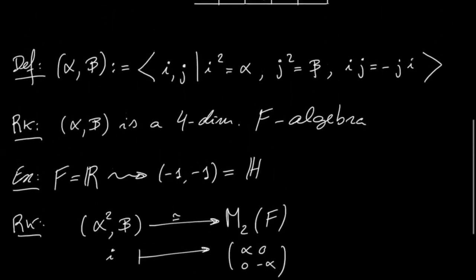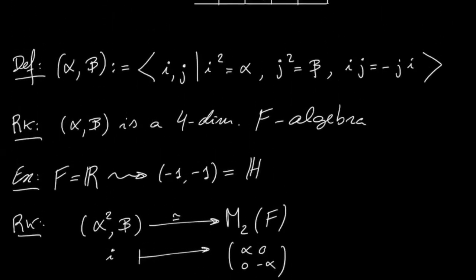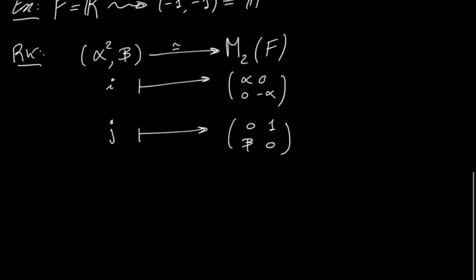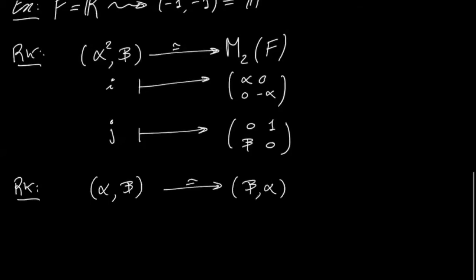Another interesting feature is that this construction is completely symmetric in i and j, so if we interchange i and j we get a similar algebra. This is the second remark: the quaternion algebra (alpha, beta) is isomorphic to (beta, alpha), simply by sending i to j and j to i.